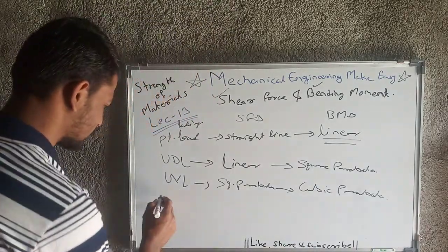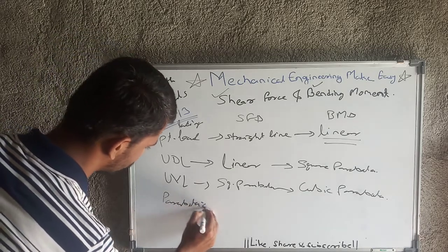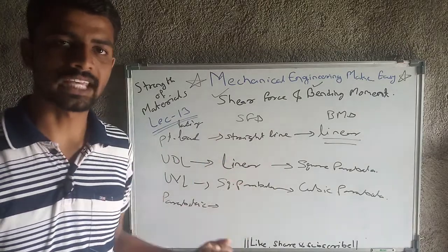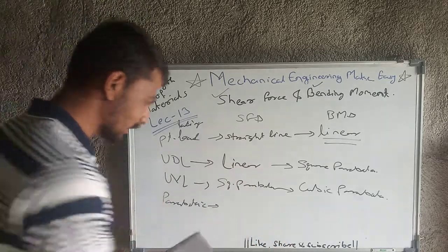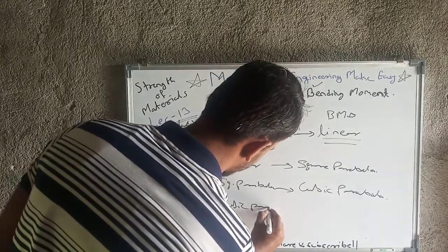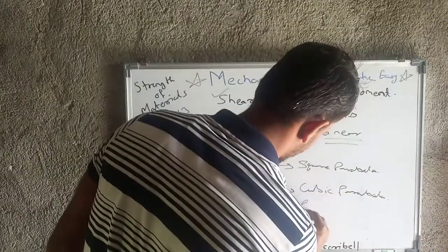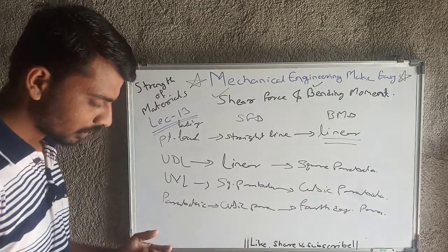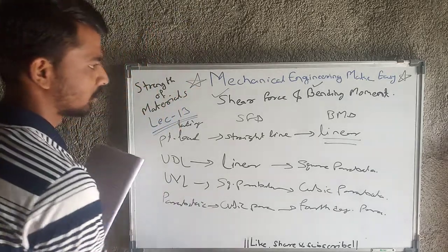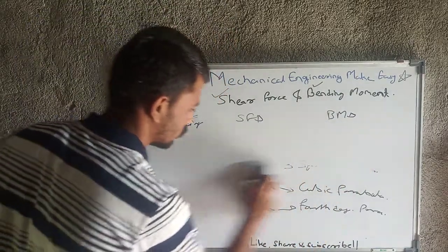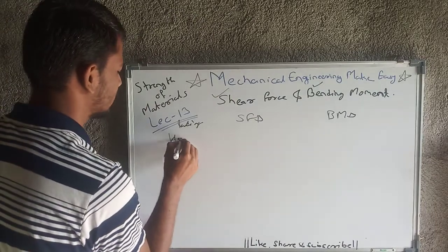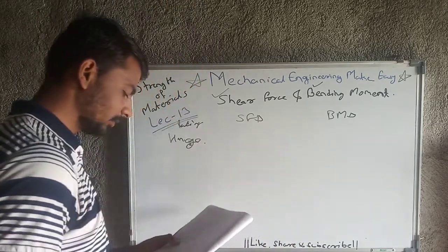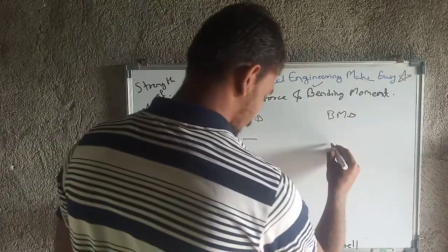For a parabolic force, the shear force diagram will be a cubic parabola and the bending moment diagram will be a fourth-degree parabola. For internal hinges — where two beams are connected — the shear force diagram does not vary, but the bending moment diagram will directly reach zero at the hinge location.